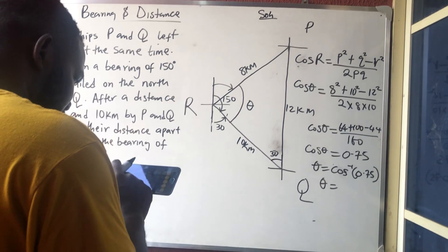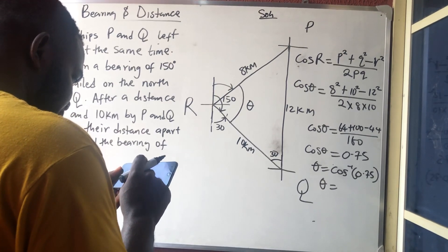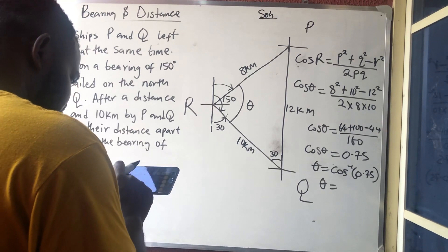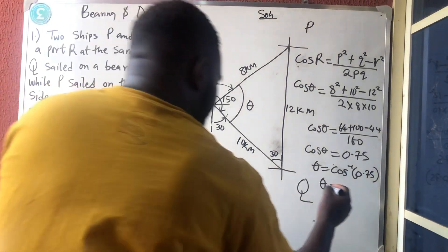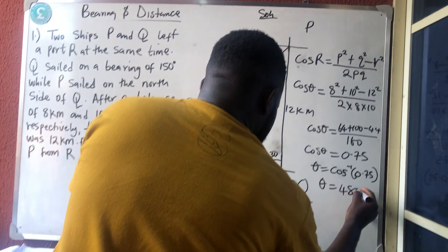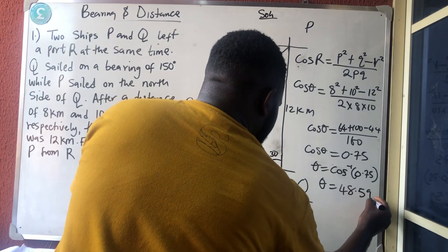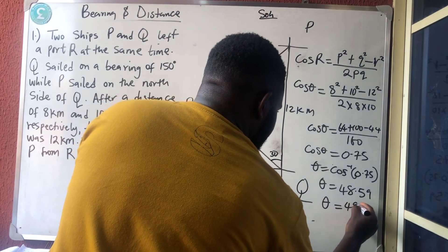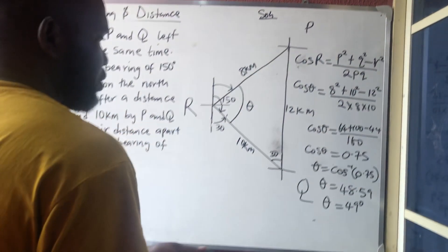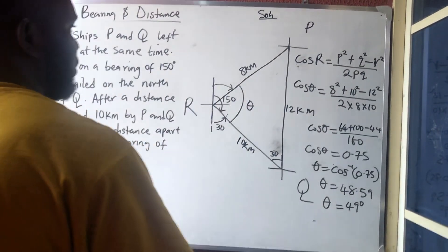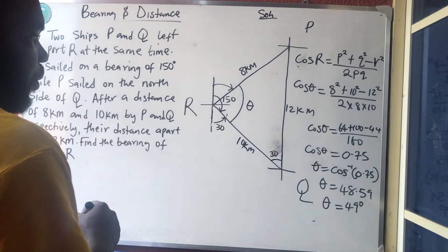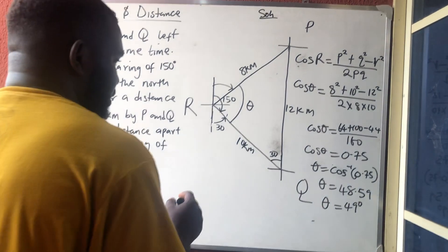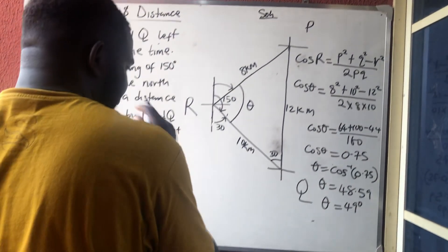Taking cos inverse of 0.75, I get approximately 41.41°... let me recalculate — I'm getting 48.59°, so rounding to the nearest whole number gives us 49°. So theta is 49 degrees.